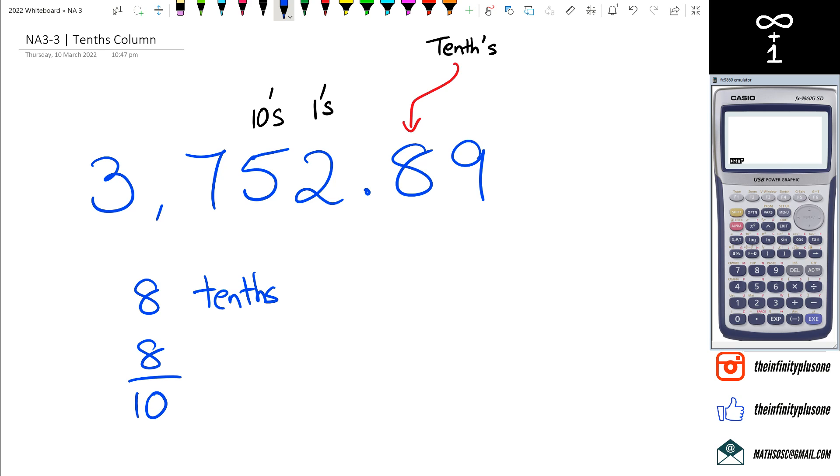If you look at the calculator I've got here running, if I do 8 divided by 10, that's going to give me 0.8. So this is a common misunderstanding people have.